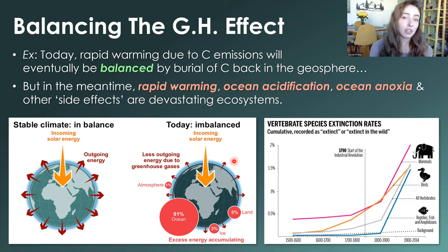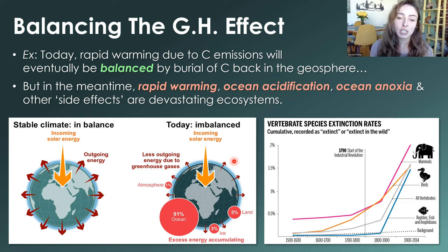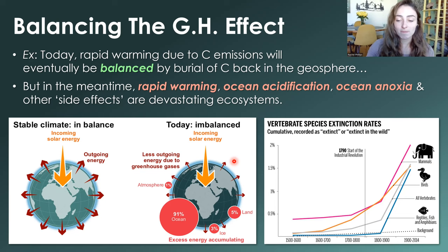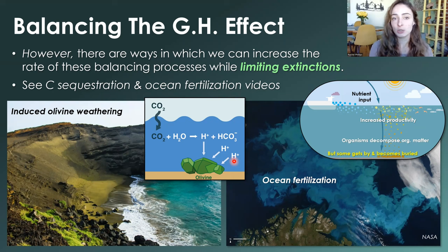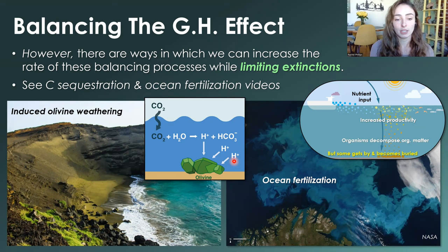In the meantime, there are side effects: the actual warming itself, ocean acidification, and ocean anoxia. These are the main three effects of modern climate change that are devastating current ecosystems and leading to major species extinctions. However, there are ways we can increase the rate of these balancing processes — like enhanced weathering or boosting primary productivity as a negative feedback. These approaches, such as carbon sequestration or ocean fertilization, might help more quickly reverse the current trend and limit extinctions, though they won't prevent them completely because they're already happening.